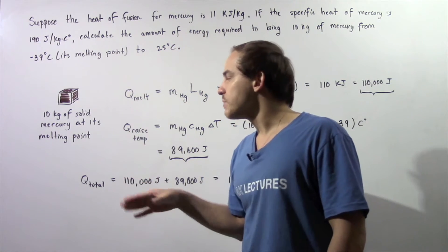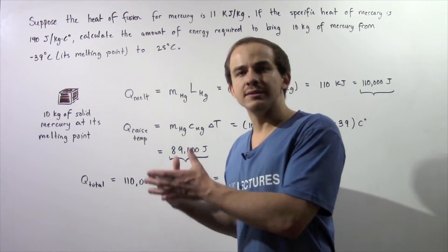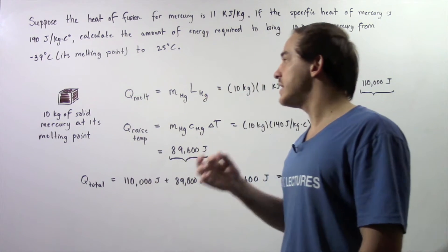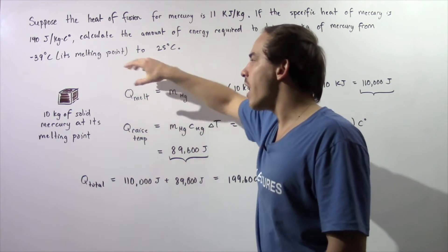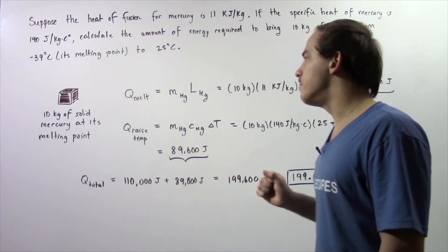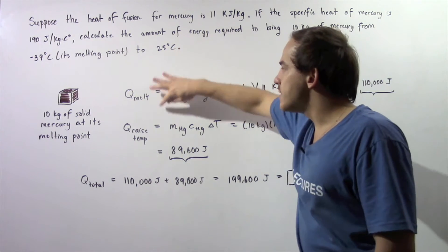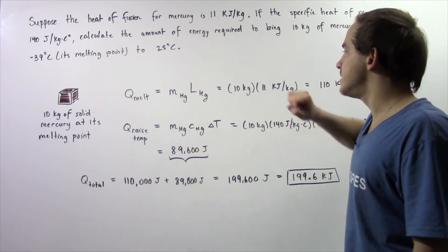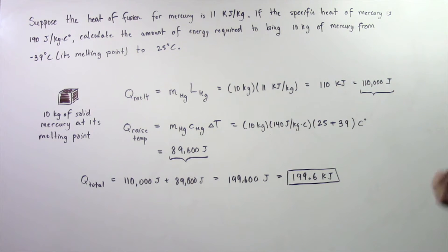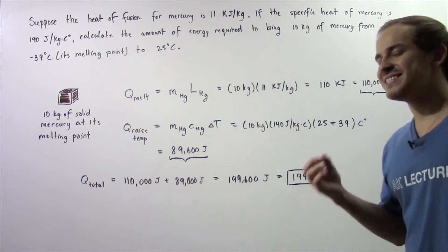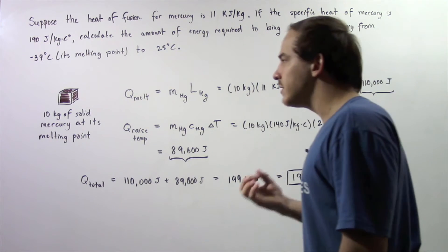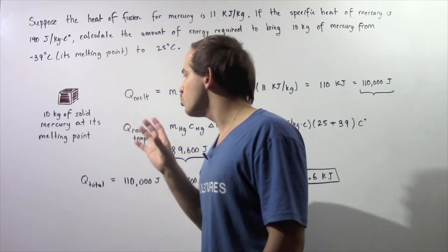We begin with a solid block of mercury at the melting point, so we need to input energy to first melt that mercury from the solid phase to the liquid phase. We multiply the mass by the heat of fusion: 10 kilograms multiplied by 11 kilojoules per kilogram, and we obtain 110 kilojoules, or equivalently 110,000 joules of energy required to completely melt the solid block of mercury into liquid mercury.